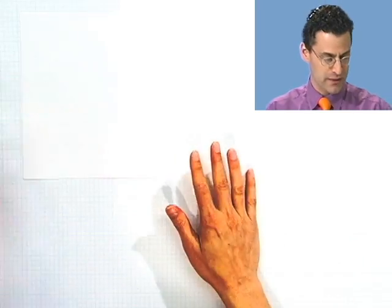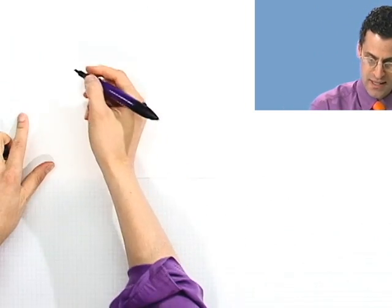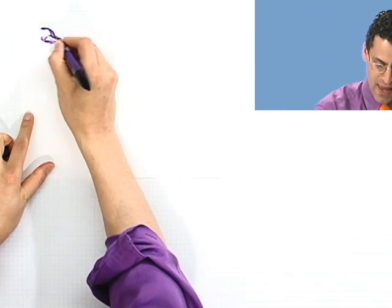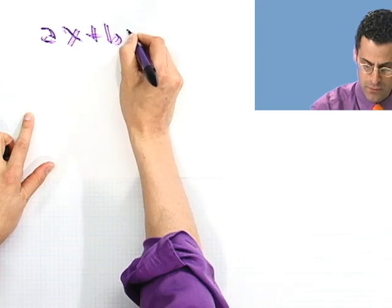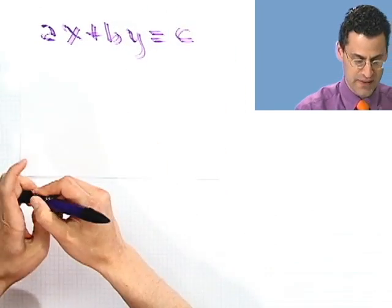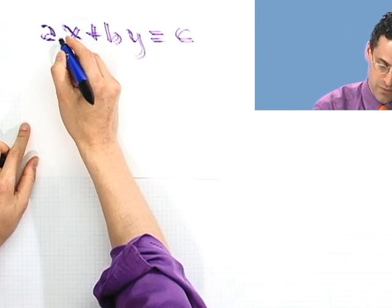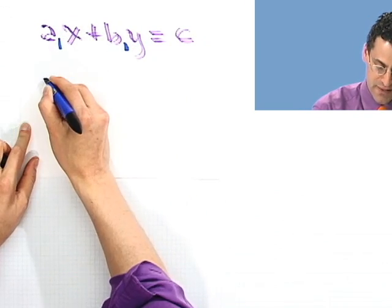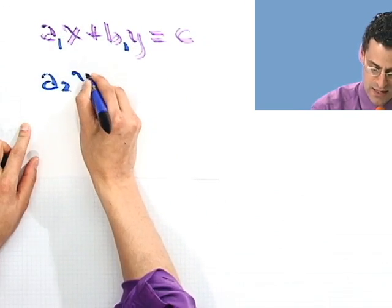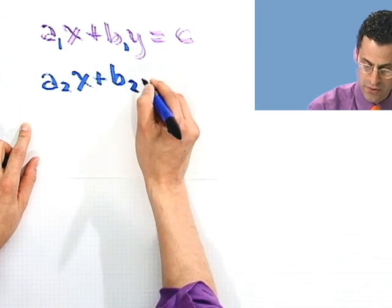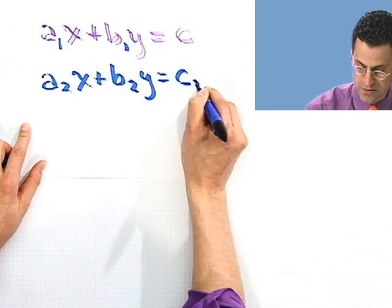All right, so now I want to take a look at how you can actually use finding inverses of matrices to actually solve equations. Now look, if you're given the following equation, let's say something like this: a1x plus b1y equals c1, and at the same time you also want to solve this one, let's say a2x plus b2y equals c2.